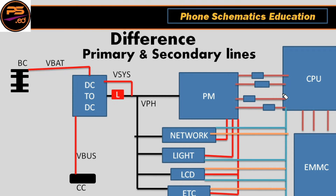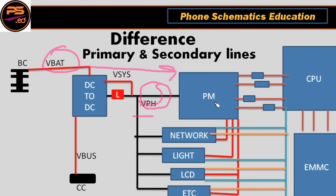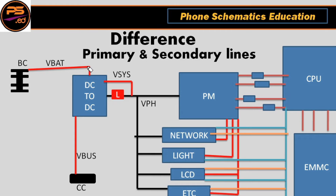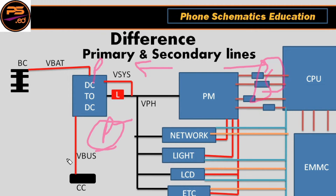There are two types of opinions on primary and secondary lines. Some people say V-bat is the primary line and all lines after the DC-to-DC IC are secondary — so VPH and LDO lines are secondary, only V-bat and V-bus are primary. Others say all lines before the power IC are primary — so VPH, V-bat, and V-bus are primary — and LDO lines are secondary. Don't get confused; we will understand this easily using a DC machine and multimeter.